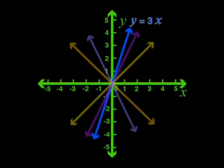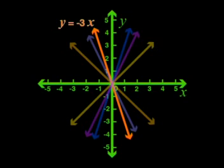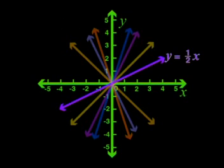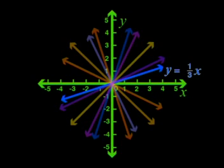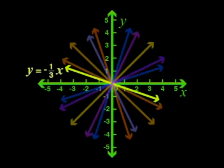Here is the graph of y equals 2x that you have seen already. Now I add the graph of y equals negative 2x. Now I will add the graph of y equals 3x and the graph of y equals negative 3x. Here is the one for y equals a half x and here is the one for y equals negative a half x. Lastly, here are the graphs of y equals one third x and y equals negative one third x.